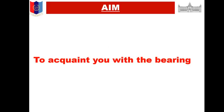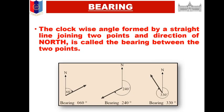The aim of this class is to explain to you what bearing is. First, what is bearing? Bearing is the clockwise angle formed by a straight line joining two points and the direction of north between those two points. That means any two points joined from the north direction — the angle formed by joining those two points is called bearing.